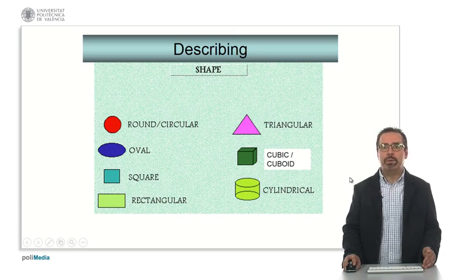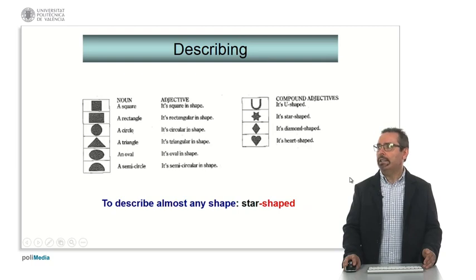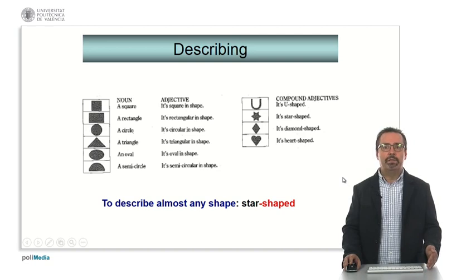We can concentrate on the shape as well. Here we have the typical geometrical shapes that we use in technical English. And it is important to note that you have to choose between a noun or adjective when you describe the shape. Here we have the most typical ones. A square, it's square in shape. A rectangle, it's rectangular in shape. Mind the different pronunciation. A circle, it's circular in shape. A triangle, it's triangular in shape. An oval, it's oval in shape. Or a semicircle, it's semicircular in shape. To describe any shape in English, if you cannot do so with these alternatives, you have the possibility of saying shaped at the end of the adjective. For example, this is star shaped. Shaped in the form of a star.